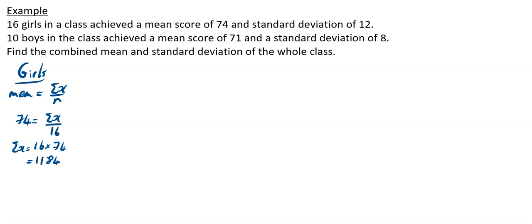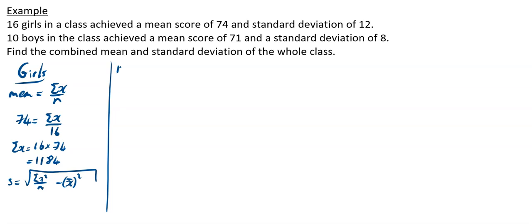Also for the girls, we have a standard deviation. The formula for the standard deviation is the square root of sigma x squared over n, minus x-bar squared. We're told in the question the standard deviation is 12. So 12 equals the square root of sigma x squared over 16, minus 74 squared.